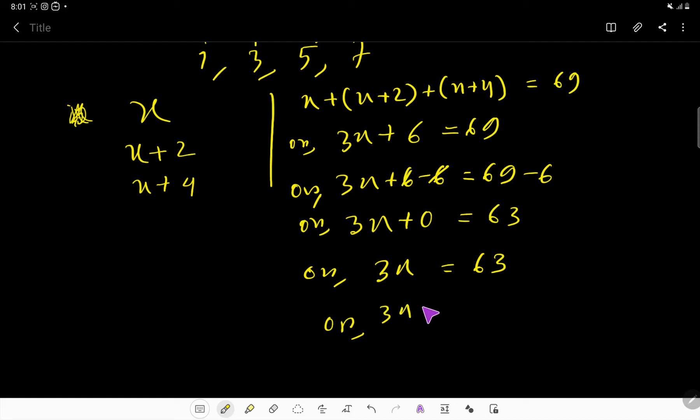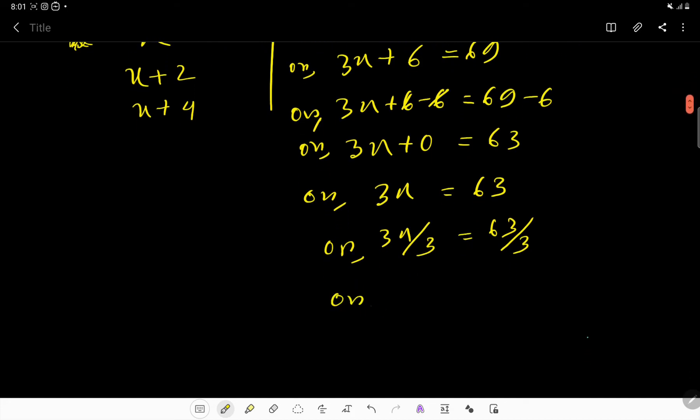Okay, now divide both sides by 3. So 3x divided by 3 equals 63 divided by 3. You are getting here, look, this 3 and this 3 cancel each other, so x equals 63 divided by 3. Now apply long form of division. So 3 goes into 6 two times, 2 times 3 is 6, 0. Bring down this 3, 3 goes into 3 one time. The quotient result is 21.